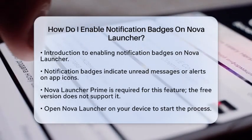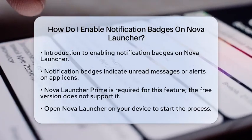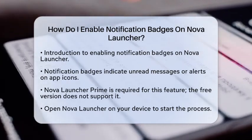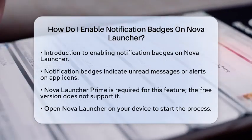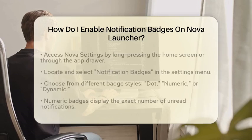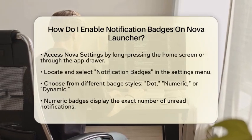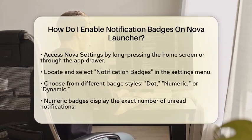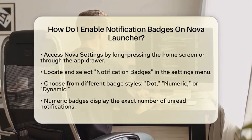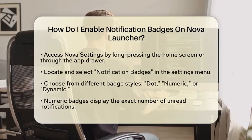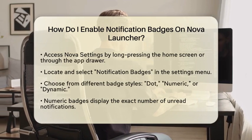Once you have that ready, let's jump into the steps to enable those badges. First, open Nova Launcher on your device. Next, you will want to access Nova settings. You can do this by long pressing on your home screen and selecting settings, or by opening the Nova Launcher app from your app drawer.